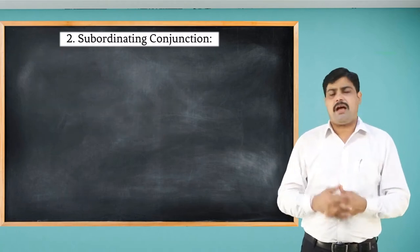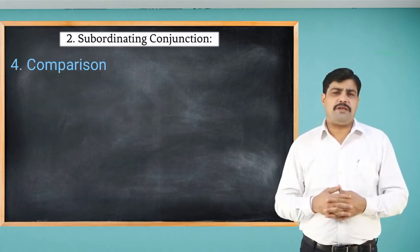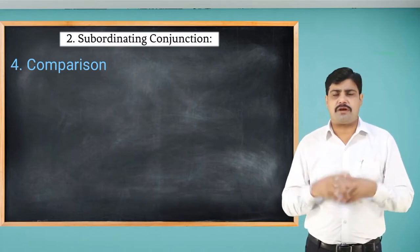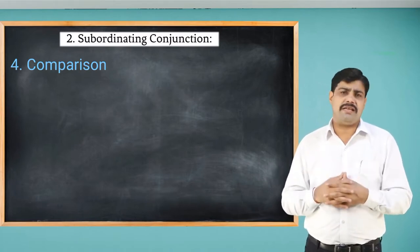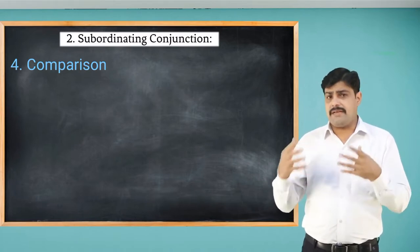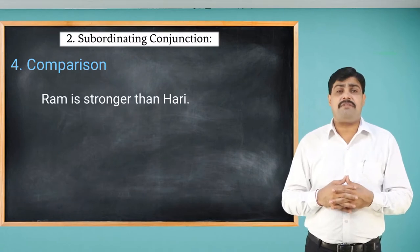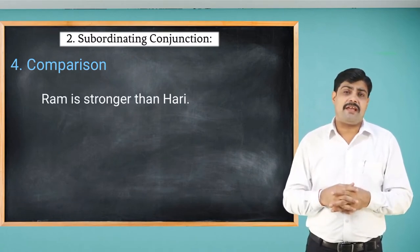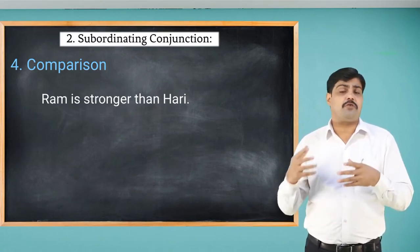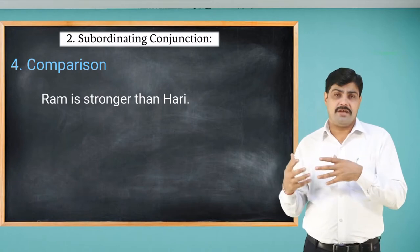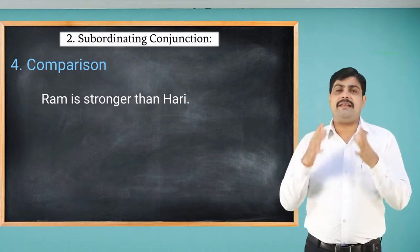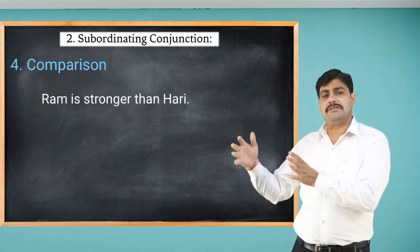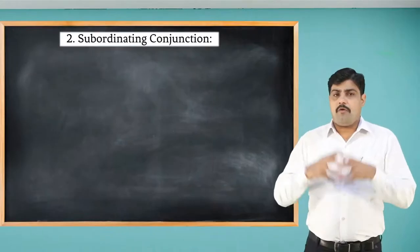Likewise, we use some conjunctions for comparison. For comparison we use 'than'. For example: 'Ram is stronger than Hari' — here 'than' is used for comparison.